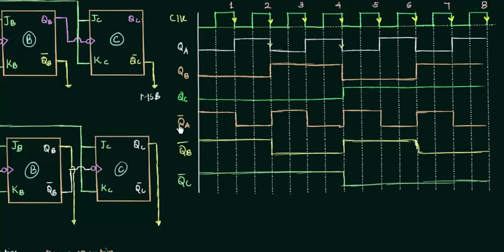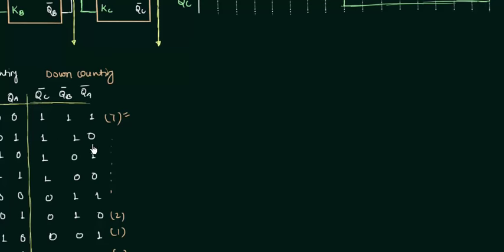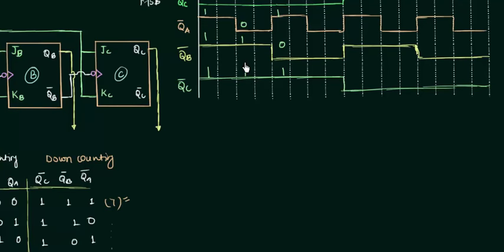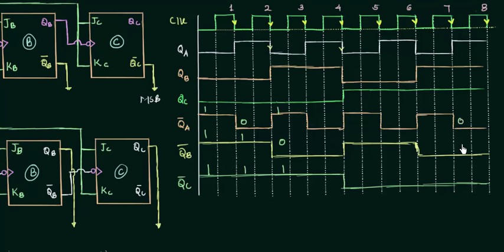Now we find the values of QA complement, QB complement, and QC complement for different clock pulses. Initially QA complement is 1, QB complement is 1, and QC complement is 1 — that is decimal 7. For the first clock pulse: 0, 1, 1; for the second: 1, 0, 1. Matching with the table confirms 7, 6, 5 all the way down to 0 at the 7th falling edge, proving from the waveform that complemented outputs give a down counter.